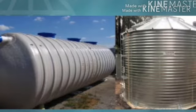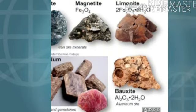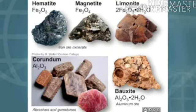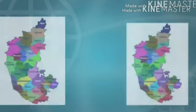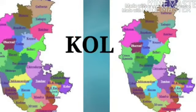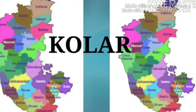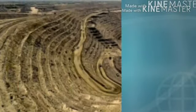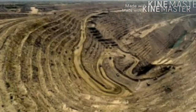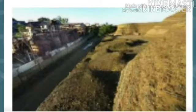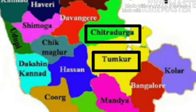This division has many mineral deposits. The most productive gold mines of the country are in Karnataka, and the Kolar Gold Mine is the most famous. However, the gold deposits of this mine have been completely used up. Iron ore deposits are found in Chitradurga and Tumkuru districts.